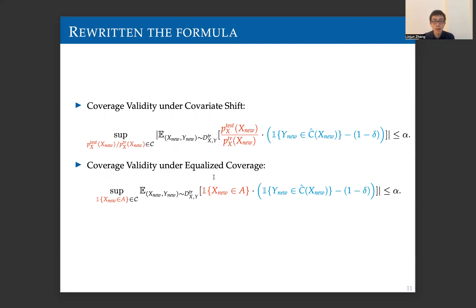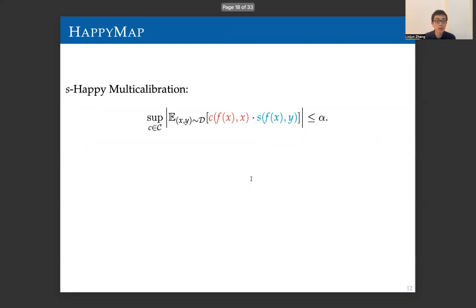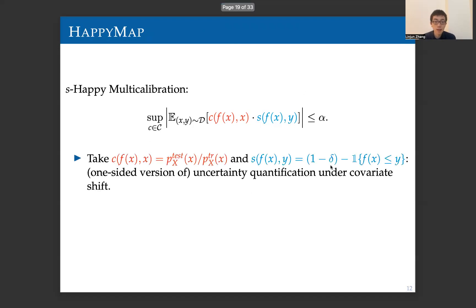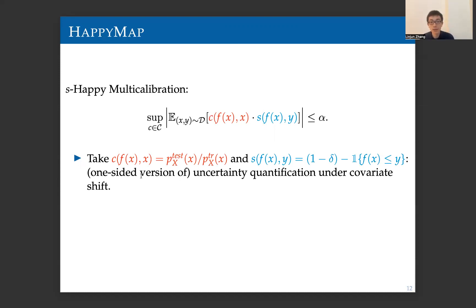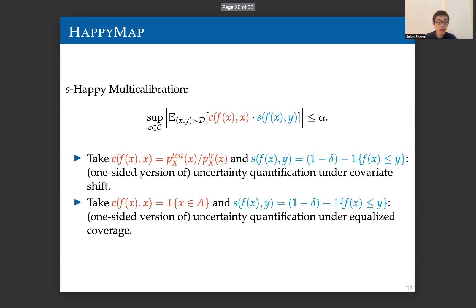Given this similarity, we introduce a notion called S-happy multi-calibration. If we take the red function c to be the density ratio and the blue function S equal to 1 minus delta minus this indicator function, then we can recover the one-sided version of the uncertainty quantification problem under the covariate shift setting. In our paper, we discuss how to transform this one-sided version to an interval. Moreover, if we take phi to be this indicator function and S to be the same form, then we recover the equalized coverage notion.